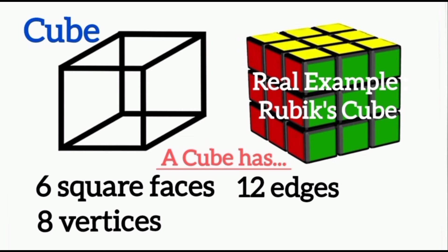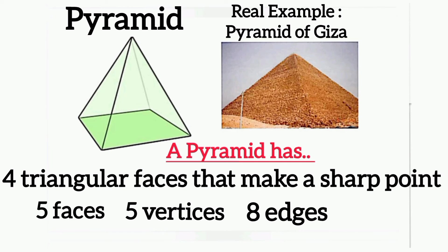Pyramid: a pyramid has four triangular faces that make a sharp point. It has five faces, five vertices, and eight edges. A real example of a pyramid is the Pyramid of Giza.